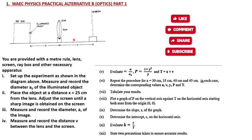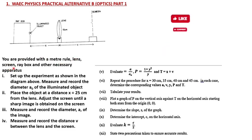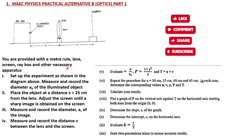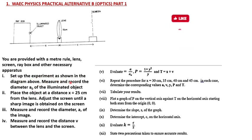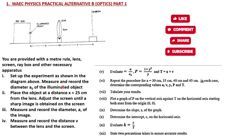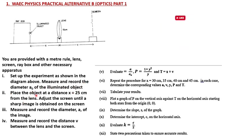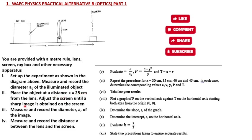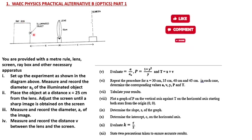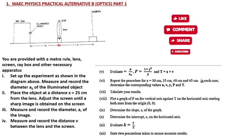Let's quickly read through the instructions. You are provided with a meter rule, lens, screen, ray box and other necessary apparatus. Set up the experiment as shown in the diagram. Measure and record the diameter A-naught of the illuminated object. Place the object at a distance s equal to 25 cm from the lens. The ray box is the illuminated object.